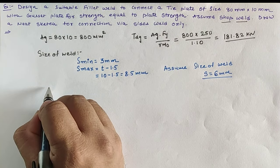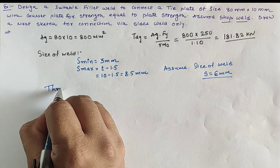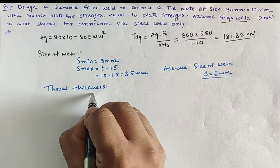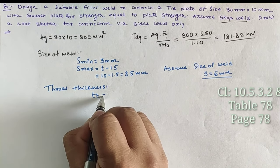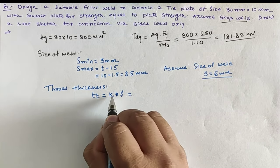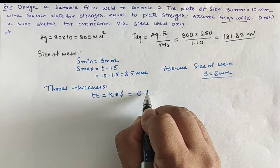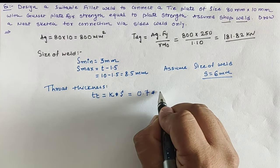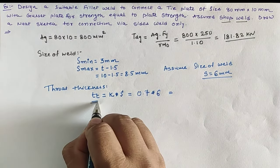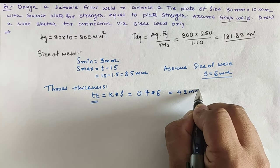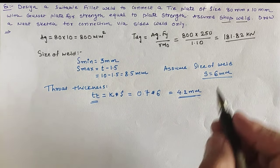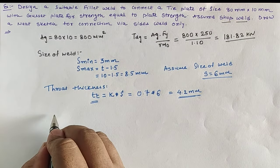From the codal provision, throat thickness is calculated by the equation: tt equals constant k multiplied by size of weld. The k value is taken as 0.7 from the tabular form, and the size of weld is 6mm. Hence our throat thickness is 4.2mm. We have given a shop weld.